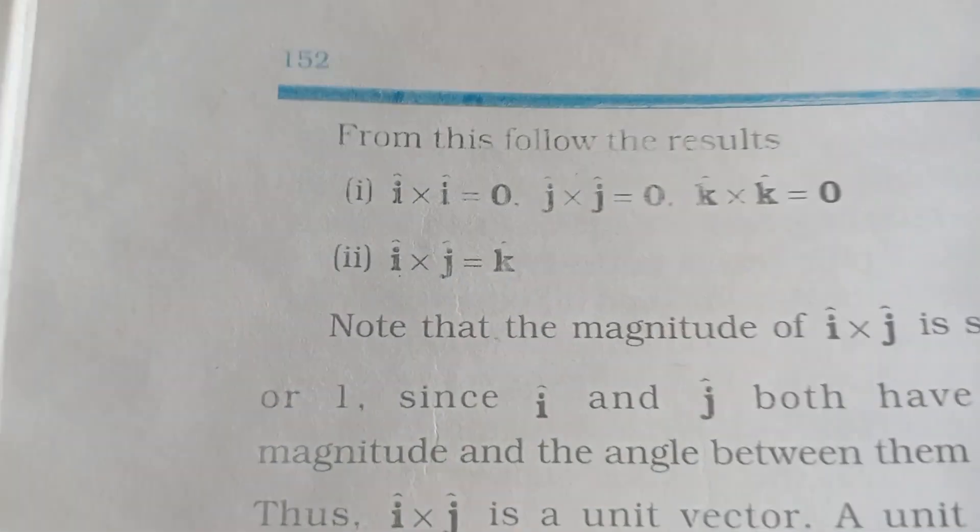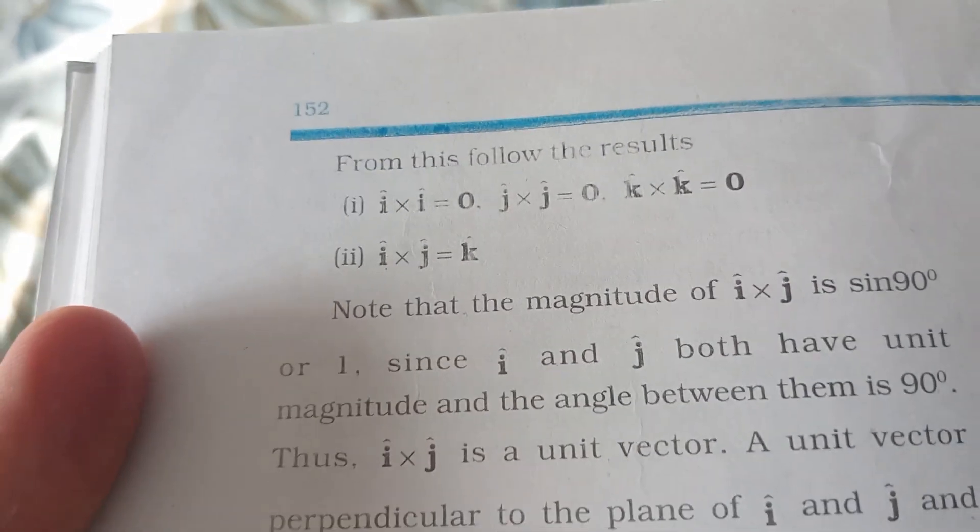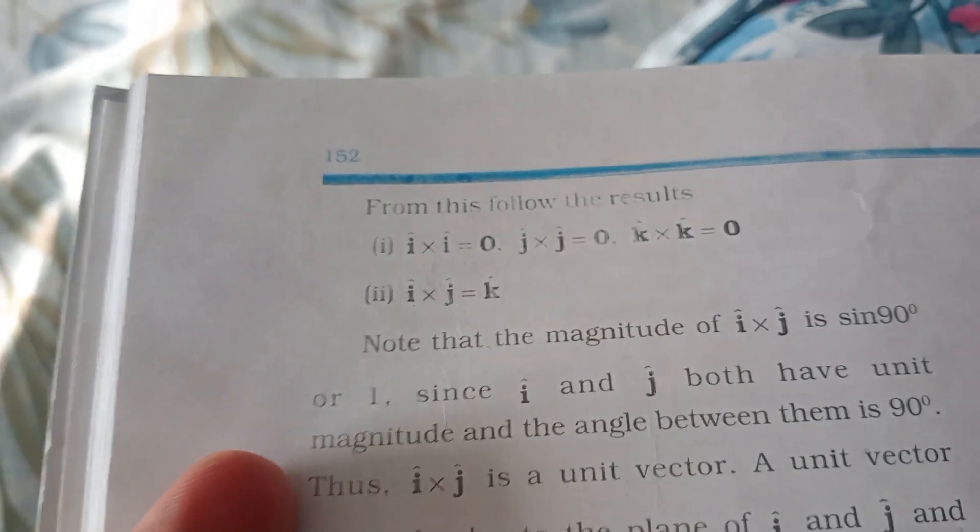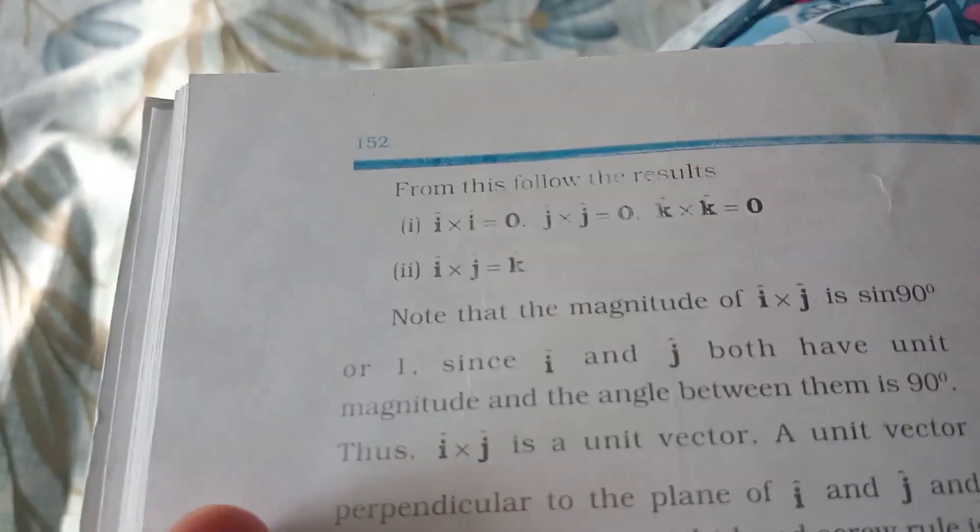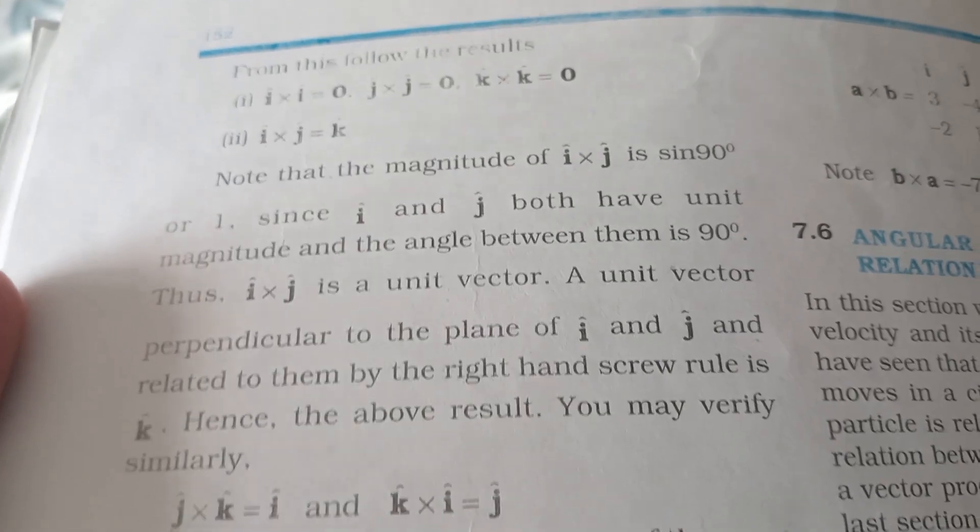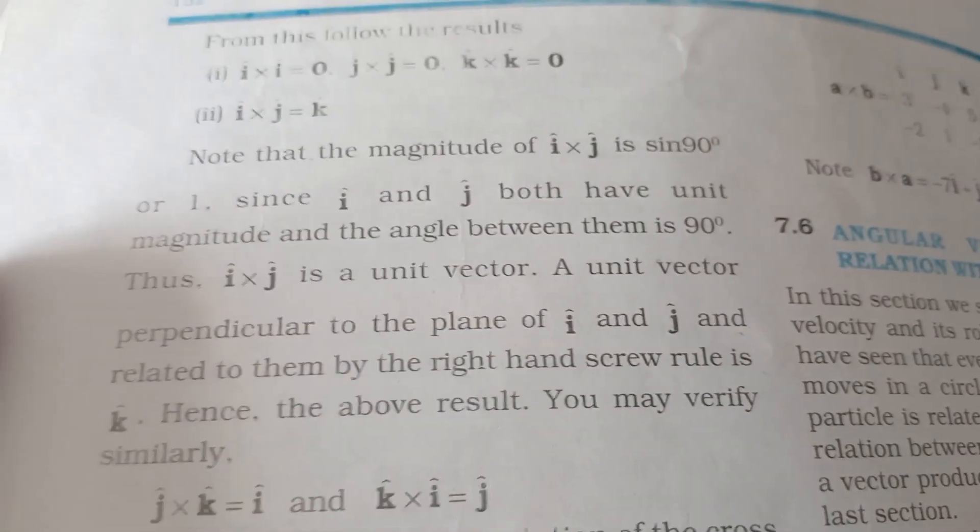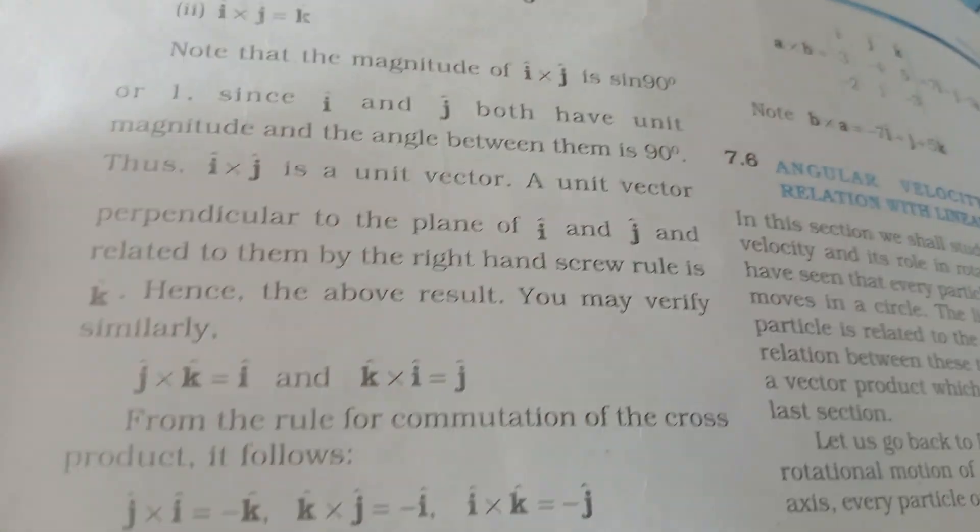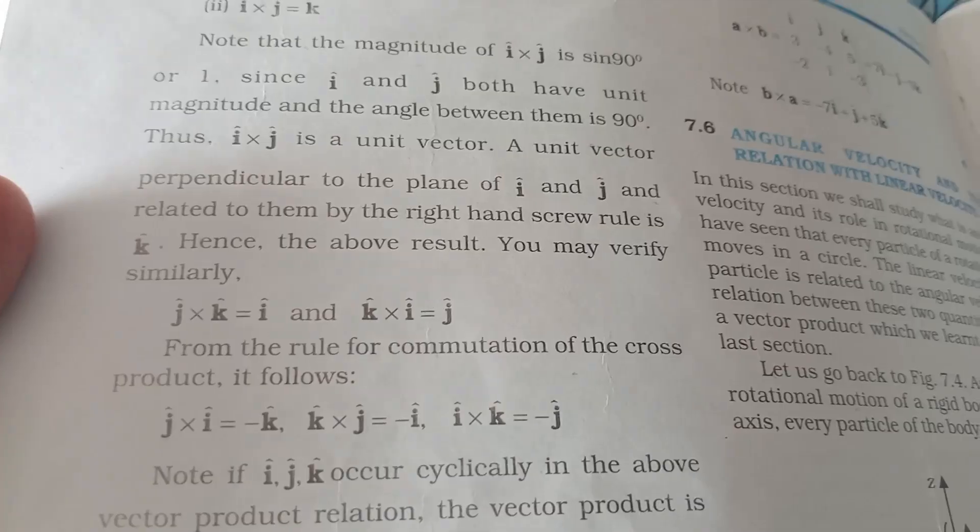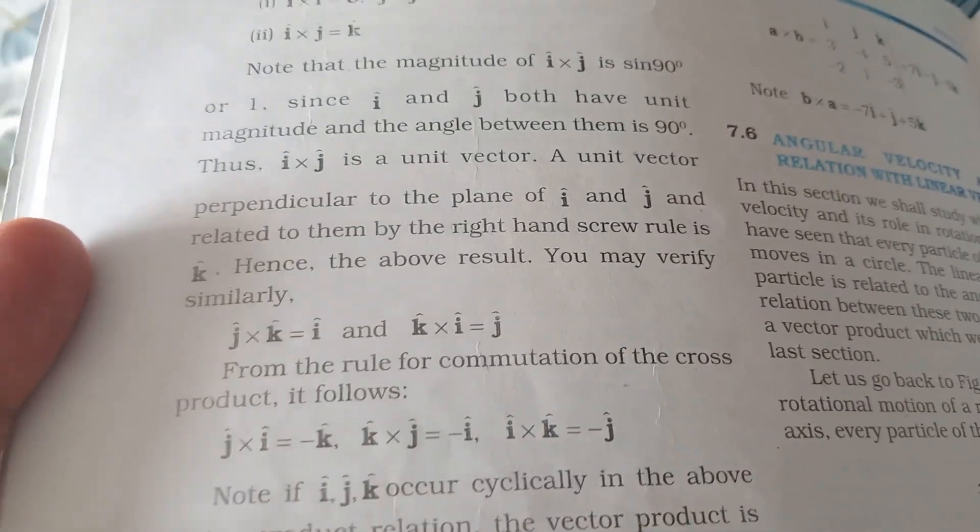This means i-cap cross i-cap equals zero, j-cap cross j-cap equals zero, k-cap cross k-cap equals zero. i-cap cross j-cap equals k-cap because they are perpendicular at 90 degrees, so sine 90 equals 1. The magnitude of i-cap cross j-cap is 1. A unit vector perpendicular to the plane of i-cap and j-cap, related by the right-hand screw rule, is k-cap. Similarly, j-cap cross k-cap equals i-cap, and k-cap cross i-cap equals j-cap.